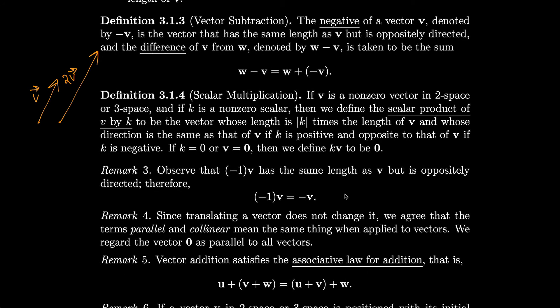Observe that minus one times v has the same length as v but is oppositely directed; therefore, the scalar minus one times v gives that negative vector. Since translating a vector does not change it, we agree that the terms parallel and collinear mean the same thing when applied to vectors. We regard the zero vector as parallel to all vectors. So any vector going in the exact same direction is considered parallel.